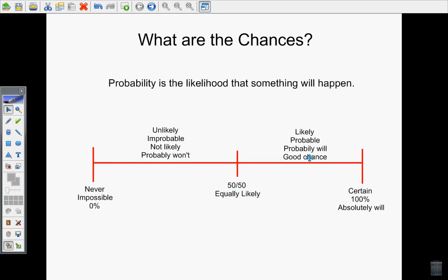Things on this side of the number line are more likely to happen than not happen. So we would say they are likely to happen, they are probable, they probably will happen, or there's a good chance.